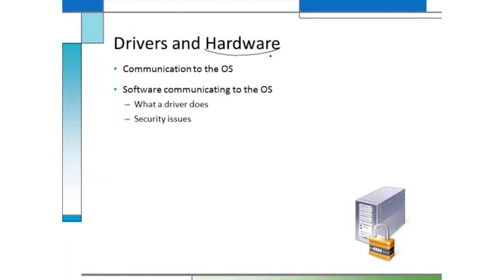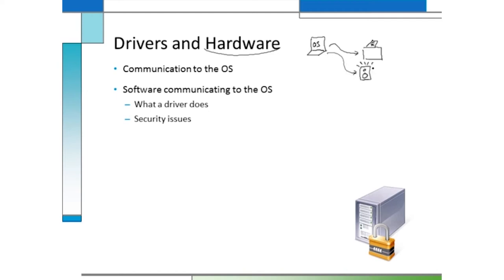Hardware is something you can usually physically see and touch — kind of the idea that if you can grab it and throw it out the window and it breaks, it's hardware. There are a number of different types of hardware devices, each with different functions. I've only been representing printers as output devices so far. Other things come out of a computer besides a print request — for example, information going out to a speaker so we can have sound that plays music files or streams videos.